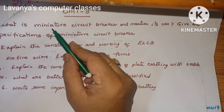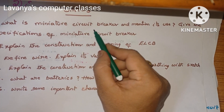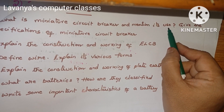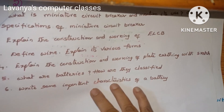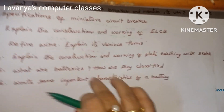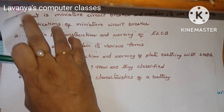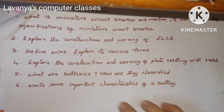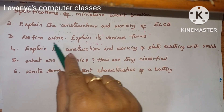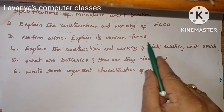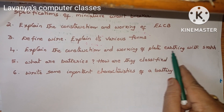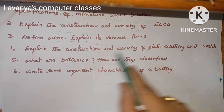The last unit — unit 5 important questions are: what is a miniature circuit breaker and mention its uses, give the specifications of a miniature circuit breaker, explain the construction and working of ELCB, and define wire and explain its various forms.